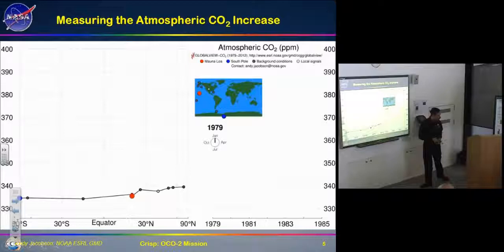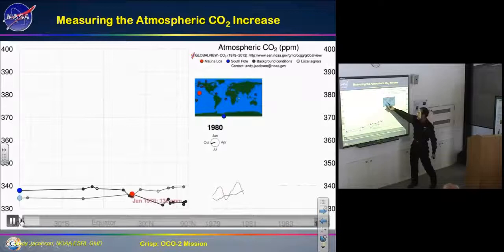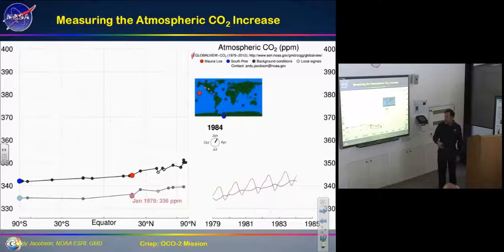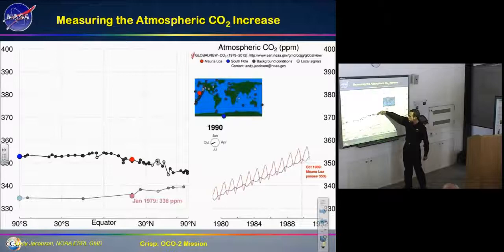We know all of this because people have been making measurements of carbon dioxide from a large number of sites around the world. Starting from Mauna Loa Observatory and other sites, measurements have been made since 1979. Each point represents a station — the South Pole, the North Pole, Mauna Loa Observatory — and you can actually watch the Earth breathe.